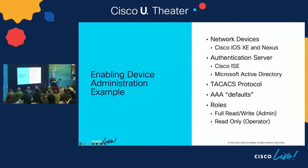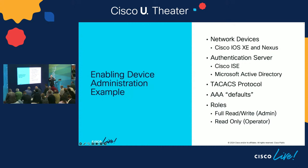We're going to talk about how to enable device administration with these characteristics in mind, looking at an IOS XE device and a Nexus-based device. Almost all IOS variants work the same way — IOS XE, legacy IOS, even XR are very similar. Our authentication server will be Cisco ISE with Microsoft Active Directory, using the TACACS protocol. RADIUS is similar but has some unique differences. We'll use AAA default policies and look at two different roles: full read-write admins and operator roles.